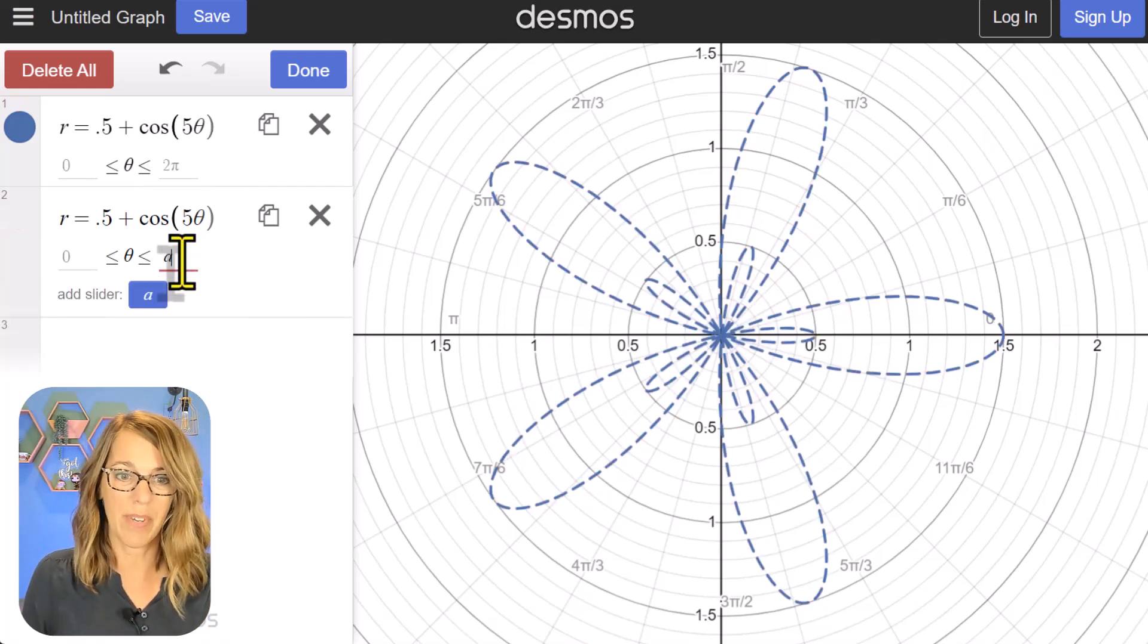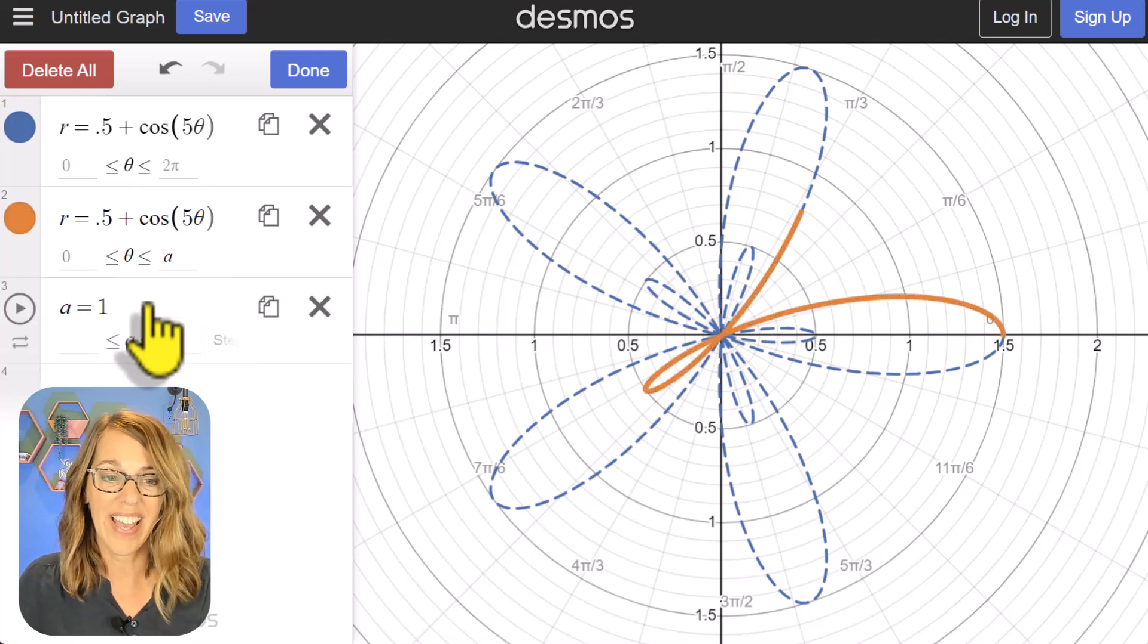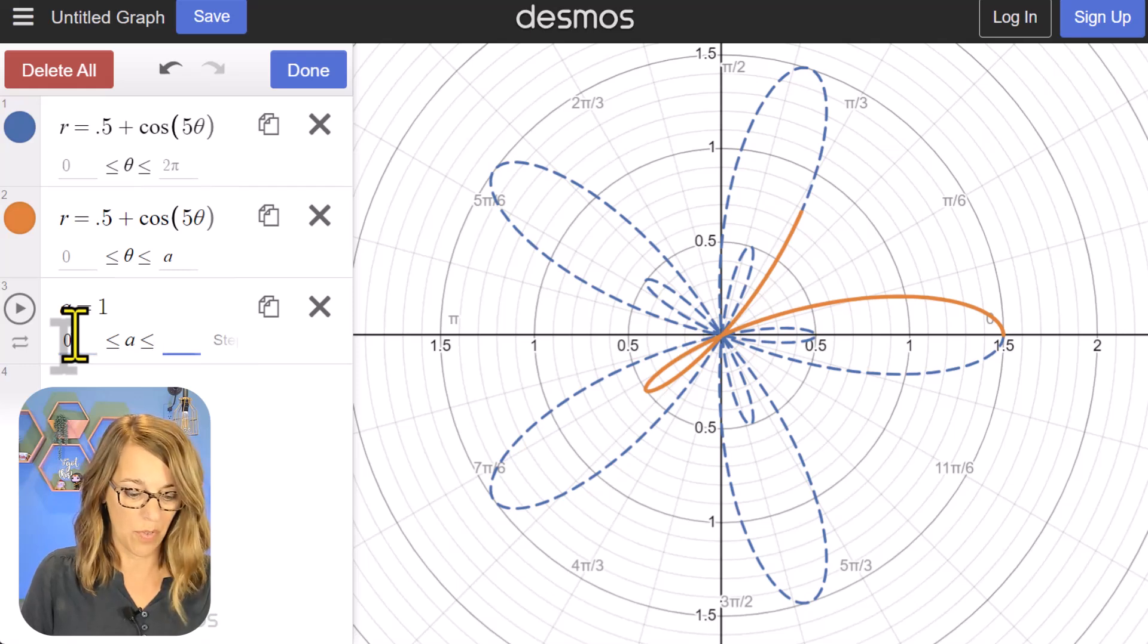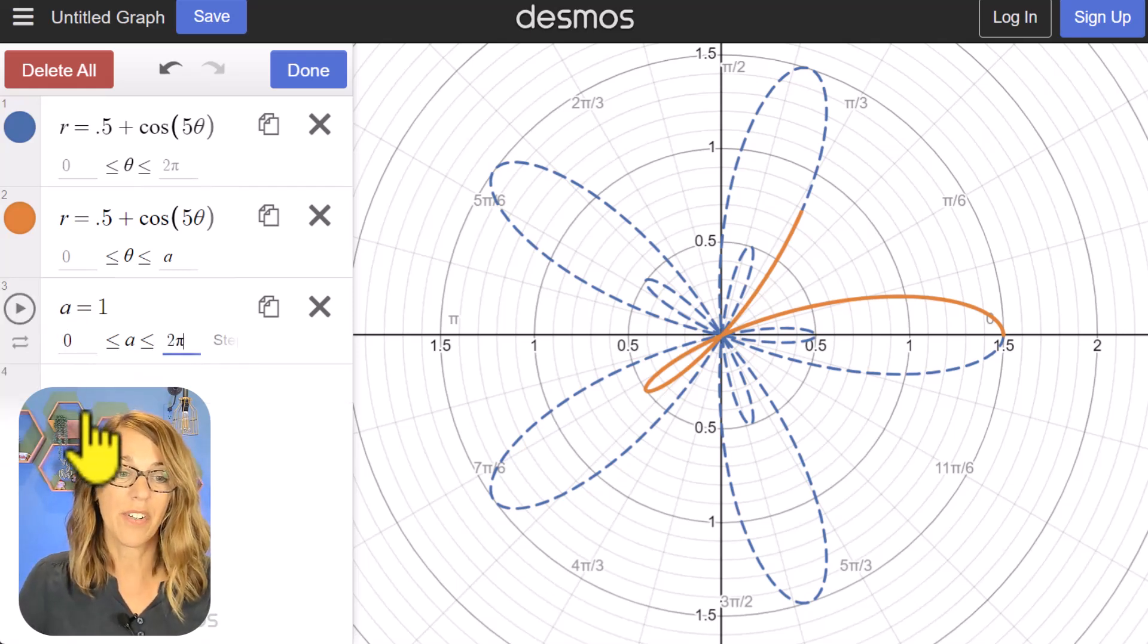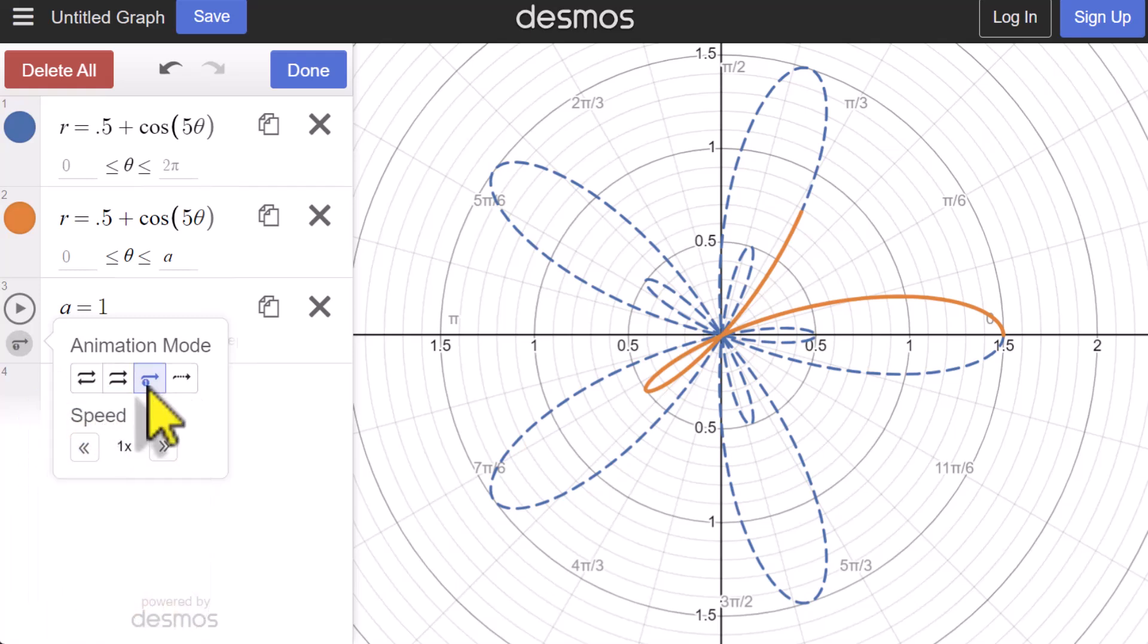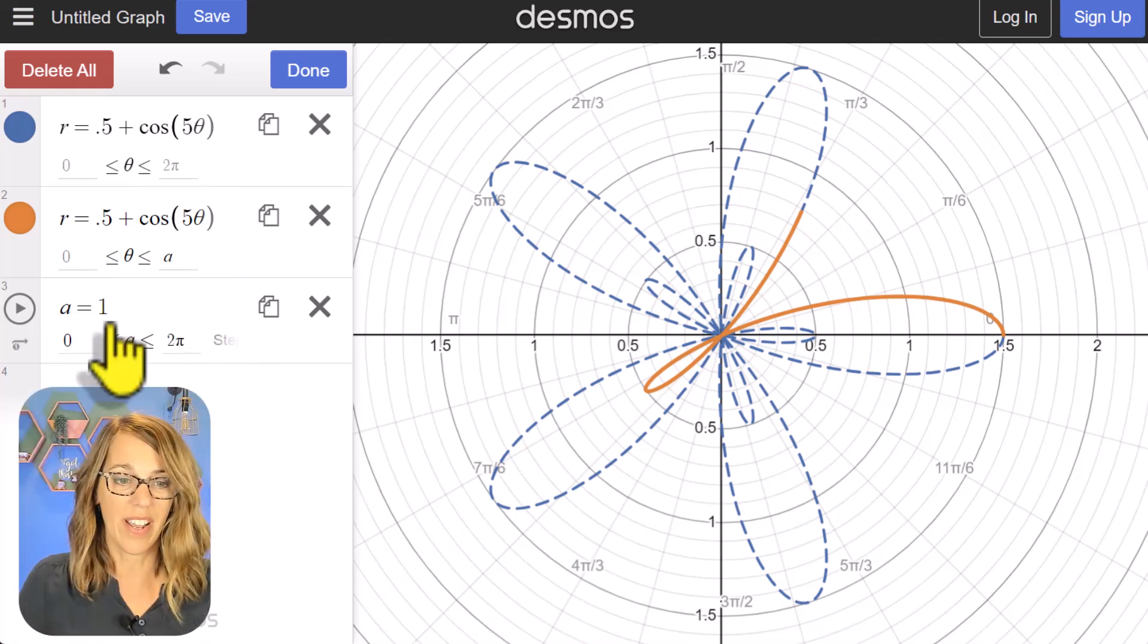Let's go ahead and add this slider, and I want those slider parameters to go from 0 to 2π. Now we're going to do the same thing, and I want to trace this just one time, so let's change those animation properties to once, and let's do a 0.75. All done there.